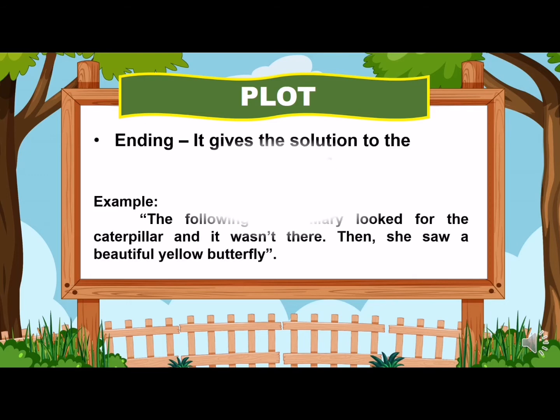And lastly, we have the ending plot. It gives the solution to the problem. Example: The following week, Mary looked for the caterpillar but it wasn't there. Then she saw a beautiful yellow butterfly. And that is the ending plot. Are you now familiar with the elements of a story? Now, try this and other exercises to practice your understanding about the topic. Good luck!